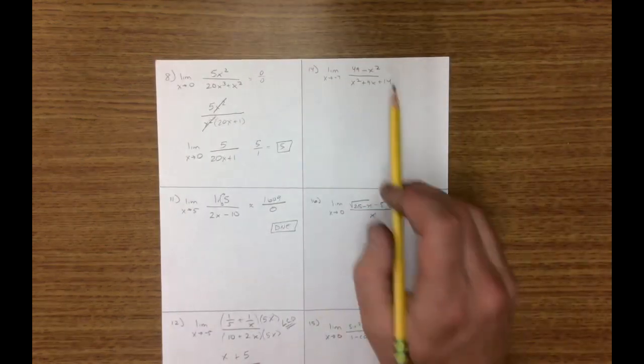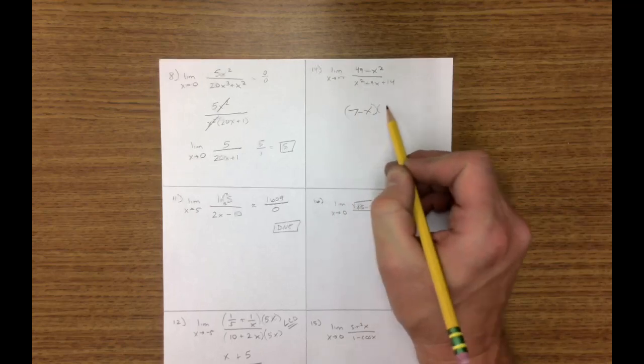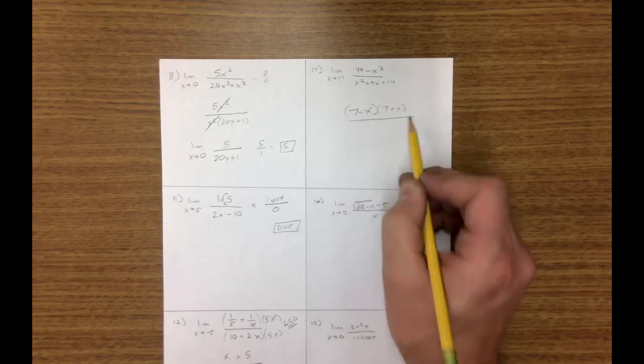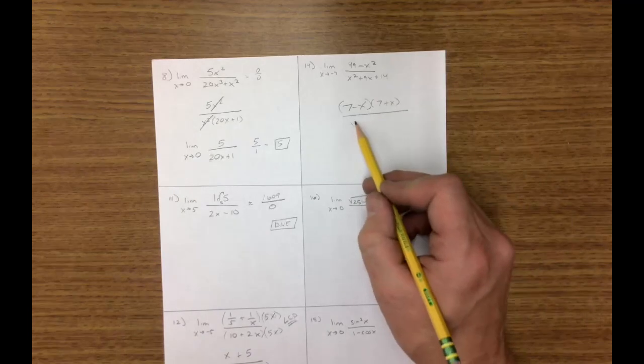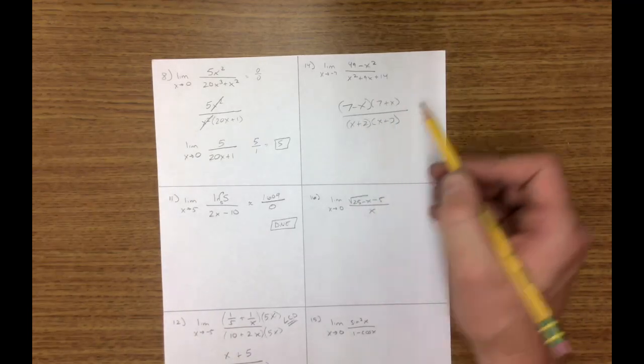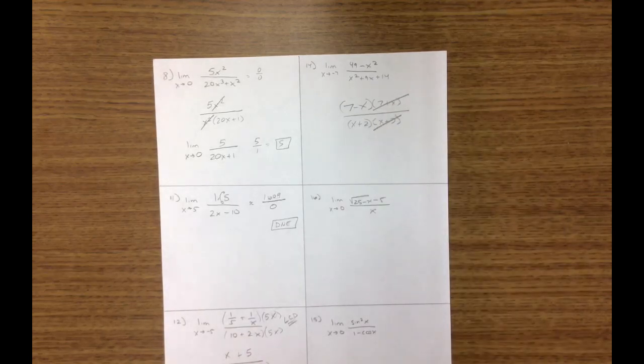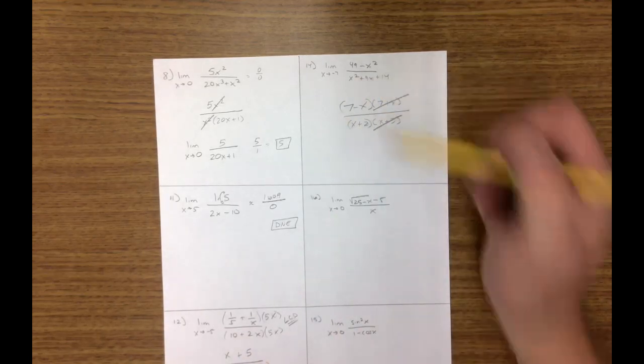On number 14, I factor this top, which is 7 minus x, 7 plus x. Be careful, a lot of people put the x first. And this is an x plus 2 and an x plus 7. And now this x plus 7 and that x plus 7 are gone. Now you can direct substitute.